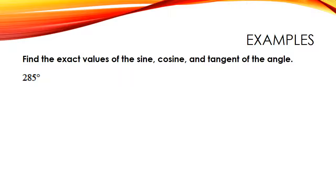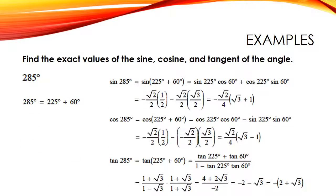Here's another example. Come up with a way to make 285° using our special angles — give this problem a try and resume the recording to check your answer when you're done. The answer is 225° plus 60°. There are often more than one right way to combine special angles to get what you're after, but there will only be one correct answer. So even if you chose another combination of special angles, you should still end up with the same result.